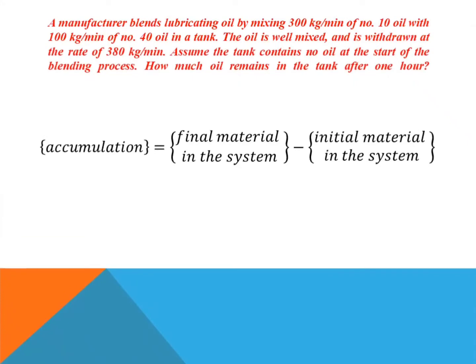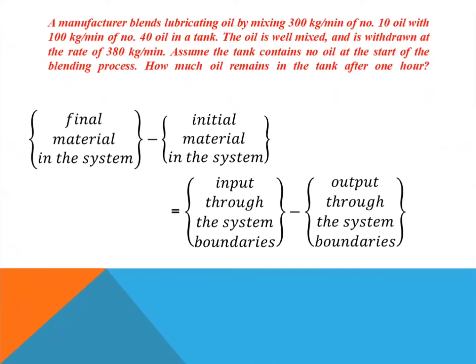Also, as here we are analyzing an unsteady state process — that is, the conditions are changing with time — the accumulation term over a time interval can be calculated as: accumulation equals final material in the system minus initial material.